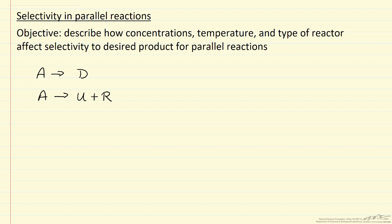In this screencast, we're going to look at how concentrations, temperature, and type of reactor affect selectivity to form a desired product when we have two parallel reactions.